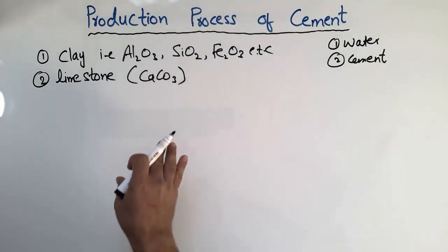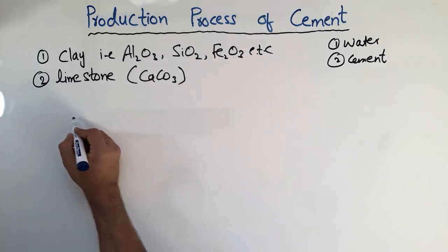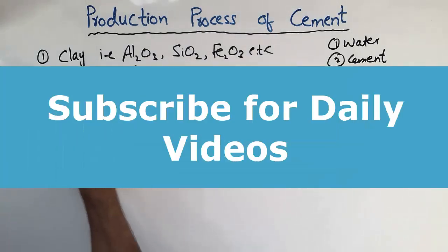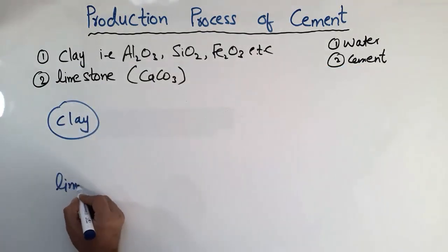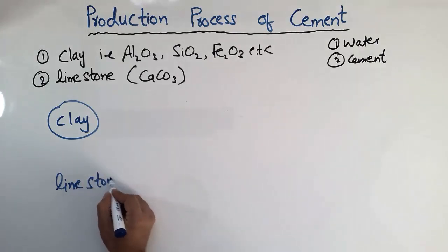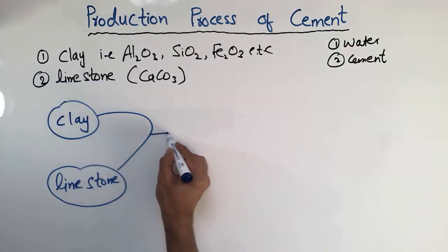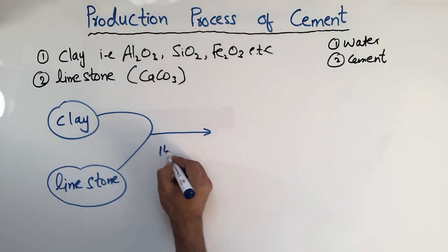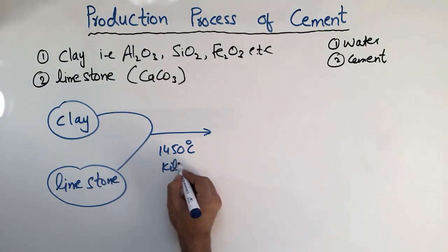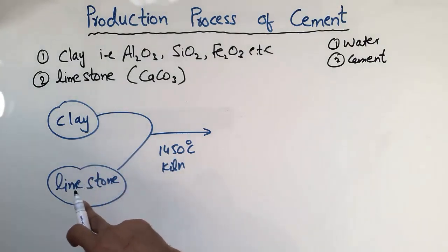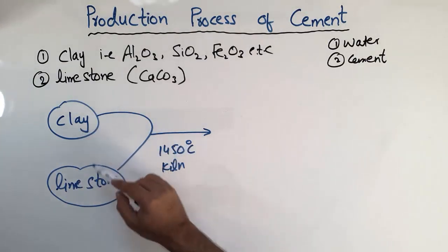Now, how do companies produce this cement? The clay is taken on one side and the limestone on the other side, and then they mix these two materials together. They heat it at 1450°C in the kiln, mixing and combining each particle with one another.